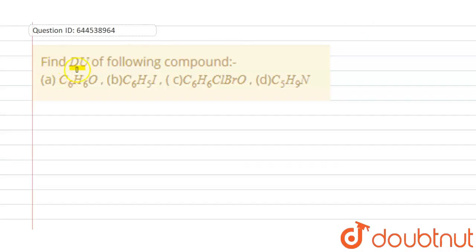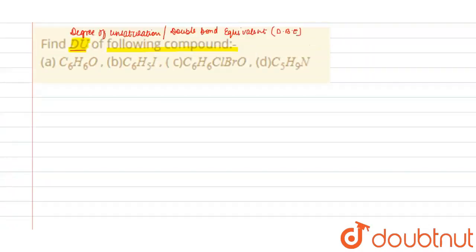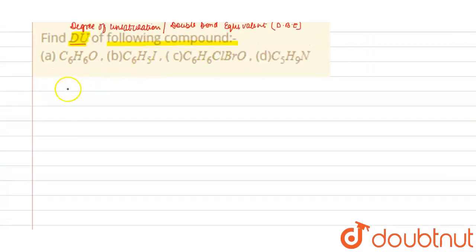Find the degree of unsaturation of the following compounds. DU means degree of unsaturation. It is also known as double bond equivalent, or DBE. In short form you can write it as DBE.